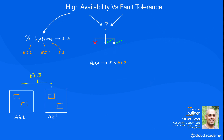In this example we have the use of two availability zones and additional EC2 instances contributing to a highly available solution. So if an instance fails we still have plenty of compute resources, or if an entire availability zone fails then we still have the minimum of two instances to maintain the required SLA.